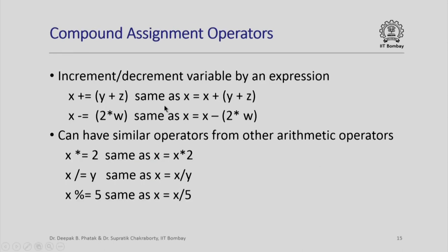Just like increment and decrement operators, we can have compound assignment operators, which increment or decrement the value of a variable by an expression. For example, x += y + z is shorthand for x = x + y + z, or x -= 2 * w is the same as x = x - 2 * w. This whole thing is an expression with a side effect, and its type and value is the same as that of x after the assignment. Similarly, we can have compound assignment operators with multiplication, division, and remainder.